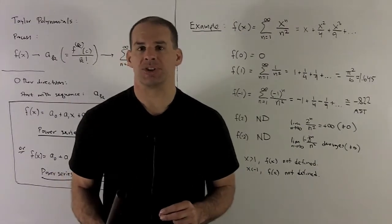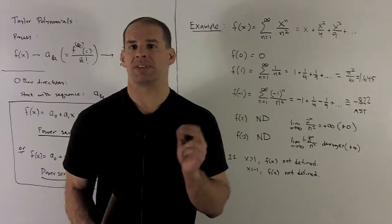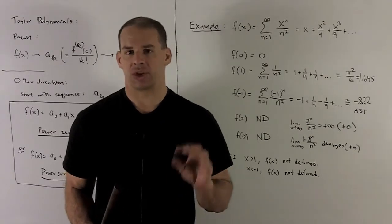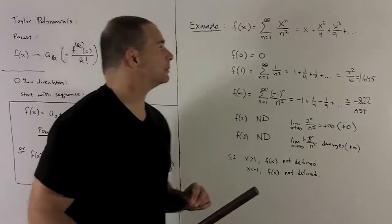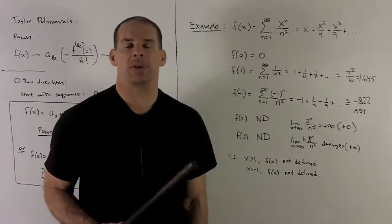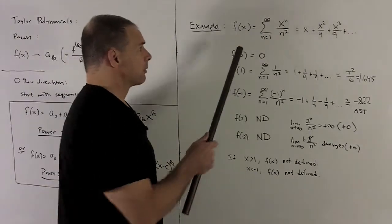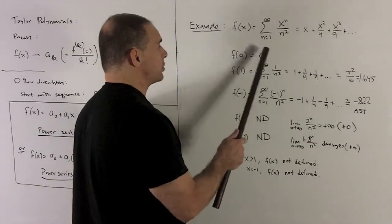Let's take a look at an example just so this makes sense. We have a lot of things floating around, we have functions, we have sequences, we have series. Let's try to bring things a little bit down to earth. So I'm going to start with the sequence I'll start with will just be one over n squared.